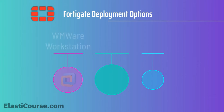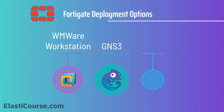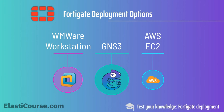We will go through three different methods: the first one is to configure FortiGate using VMware Workstation, a very famous virtualization application; also using GNS3, which is one of the best network emulators that you can use to learn networking and security; and also using AWS EC2 as a cloud provider.